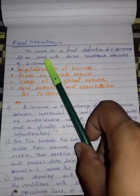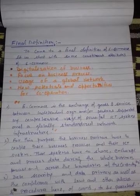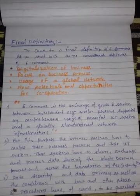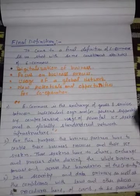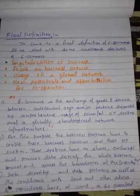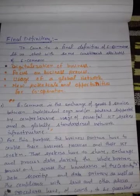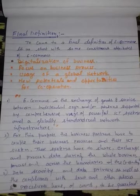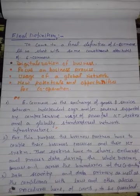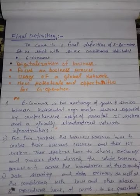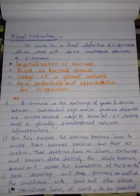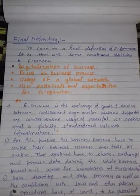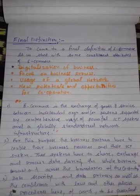Now let us look at the constituent attributes of e-commerce. The first attribute is digitalization of business — nowadays all business activities are digitalized, including fund transfers, goods orders, and other things, and there is a need for digital signatures also. The second attribute is focus on business processes — e-commerce focuses on business processes like order receiving, order delivery, fund transfer, and all these things are secure and beneficial for all businesses and customers.